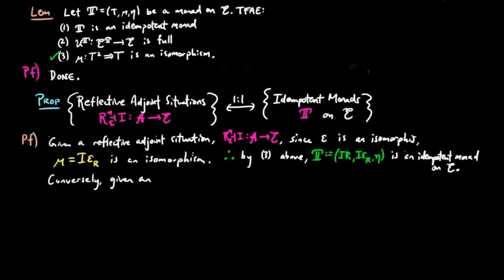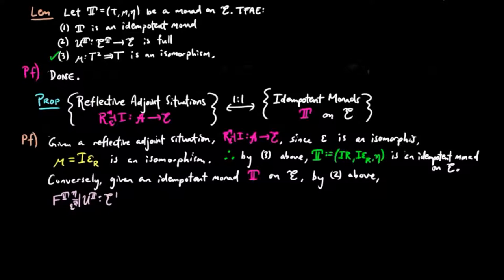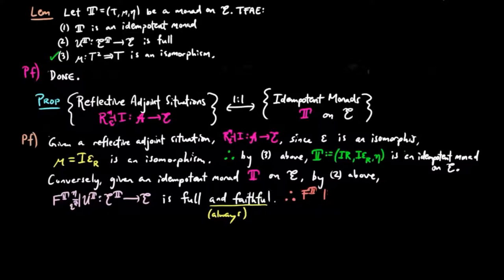Conversely, given an idempotent monad T on the category E, by condition 2 above, the free-forgetful adjoint situation for the Eilenberg-Moore category is full and faithful. Therefore, the co-unit epsilon T is an isomorphism, and hence Ft, Ut is a reflective adjoint situation.